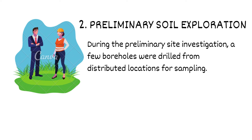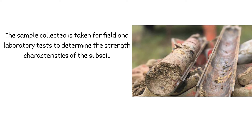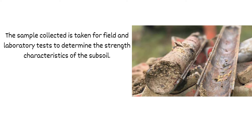Stage two is the plan for preliminary investigation of the soil. During preliminary site investigation, a few boreholes are drilled from distributed locations for soil samples. The samples collected are taken for field and laboratory tests to determine the strength characteristics of the soil, leading to preliminary drawings and design. If the study is unsuitable, the procedure is conducted at different locations using repeated procedures.